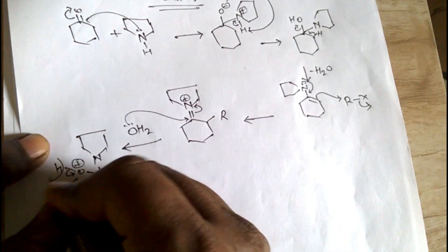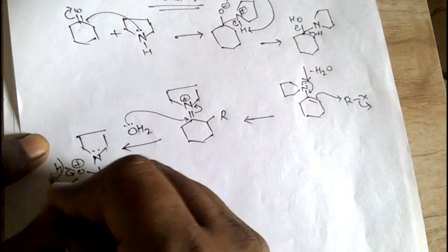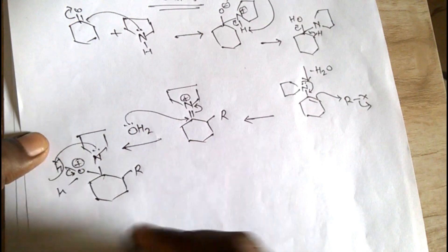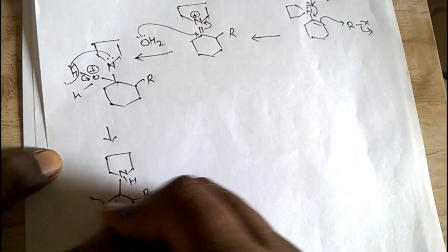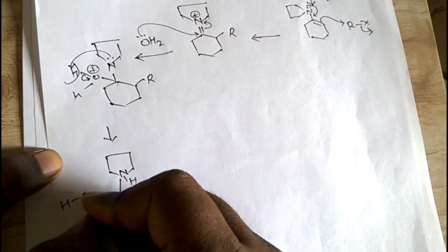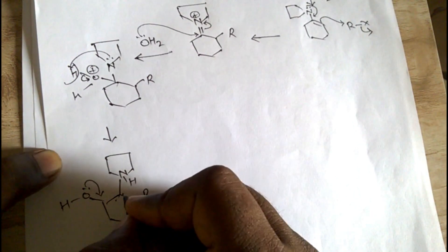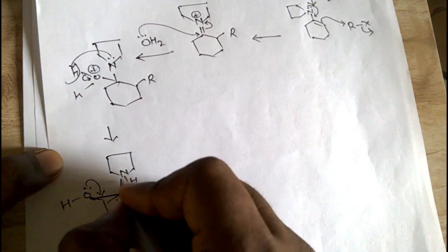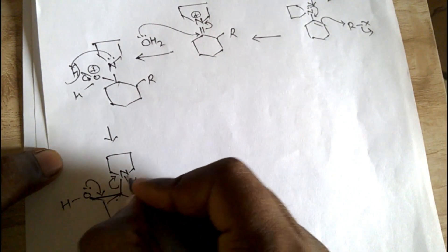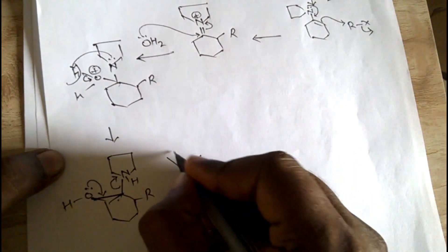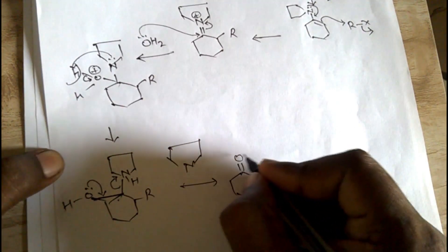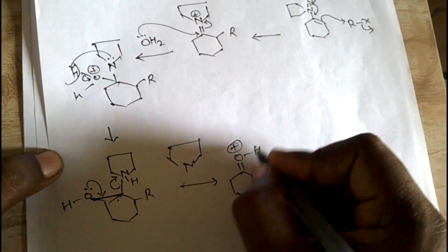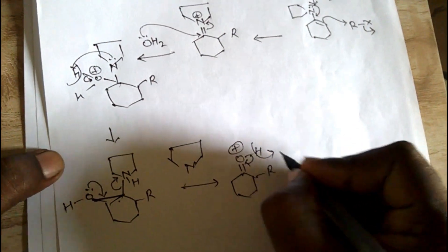After that, H will release from here, and the nitrogen lone pair will catch this H. The oxygen lone pair will shift like this — this bond shifts towards nitrogen and this group is released. The OH becomes positively charged, this bond shifts towards the oxygen, and H+ is released.